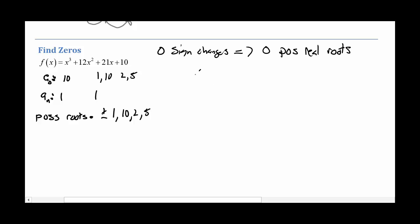So let me set up our synthetic division. So x cubed, x squared, x, and a constant. And we'll collect those up, 12, 21, and 10. All right. And since I know I'm hanging out in the negatives, I'm going to start with negative 1. And let's see what we get.